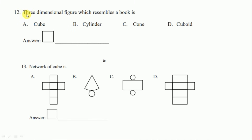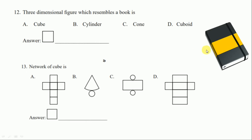Question number twelve: the three-dimensional figure which resembles a book. A book resembles a cuboid. So we write option D, cuboid.